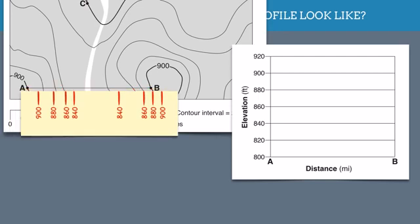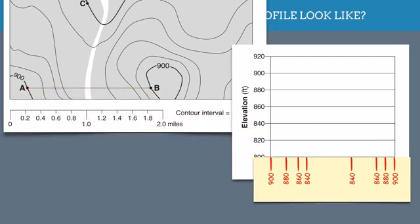Now that I've done this, I can take my scrap paper and move it over to the bottom of my graph. And we're going to go ahead and plot points for each of these elevations. For example here, 900, 880, 860, 840, 840, 860, 880, 900. And now all I need to do is connect these dots with a smooth curving line, and I've done it. This is a profile view of that valley. That white stream there, that would be flowing down at the bottom of this valley.